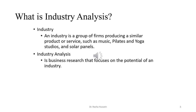This chapter is divided into two parts. In the first part, we will be discussing industry analysis, and in the second part, competitor analysis. Industry is a group of firms producing a similar product or service. Industry analysis is business research that focuses on the potential of an industry — meaning the viability of an industry, whether it is viable or not.